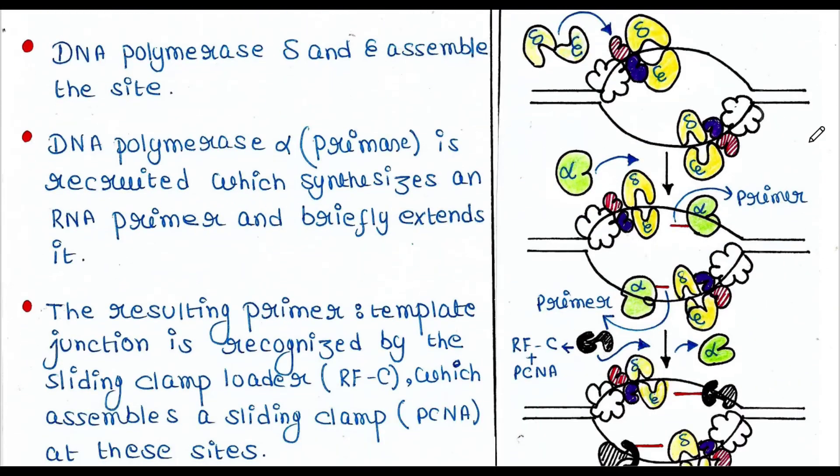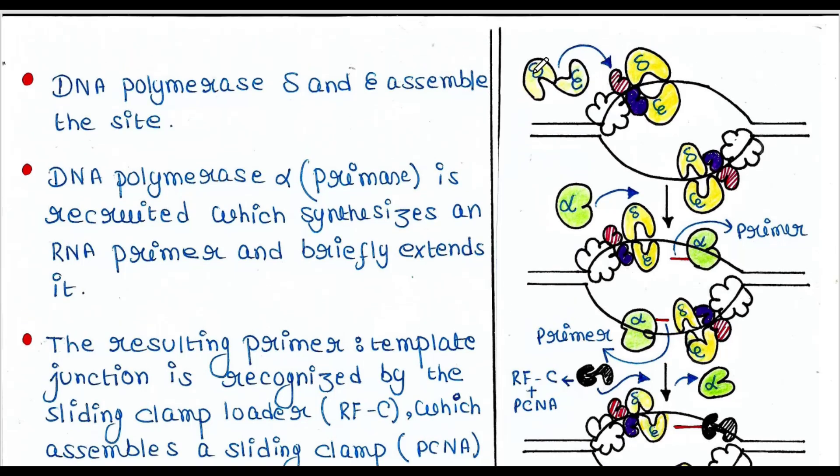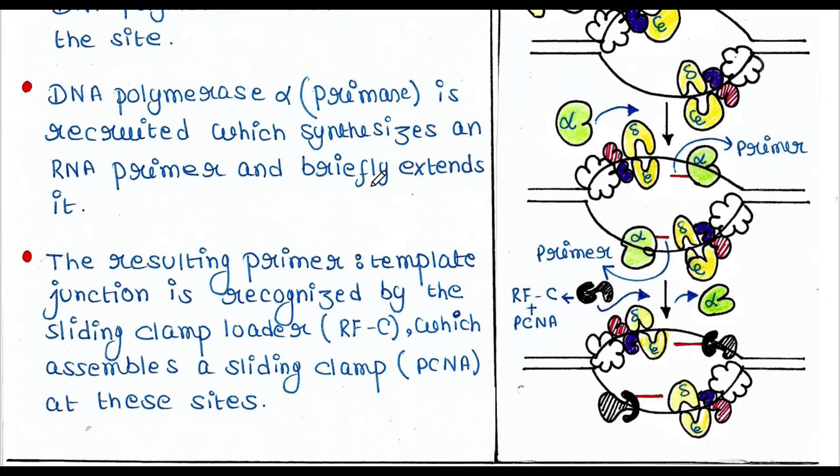DNA polymerase delta and epsilon now assemble at the site. So the whole site is intact where DNA polymerase delta and epsilon assemble. Now DNA polymerase alpha is recruited. DNA polymerase alpha is nothing but primase.